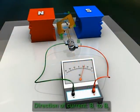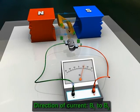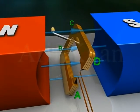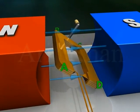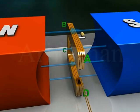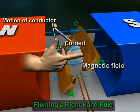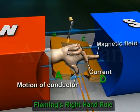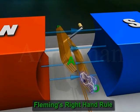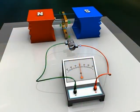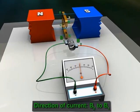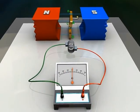So the current will flow from B1 to B2 through the galvanometer. During the next half rotation, arm AB moves up while arm CD moves down. Again, by Fleming's right-hand rule, current will flow in the direction ABCD — that is, from B2 to B1 through the galvanometer. Thus the induced current changes its direction every half rotation.